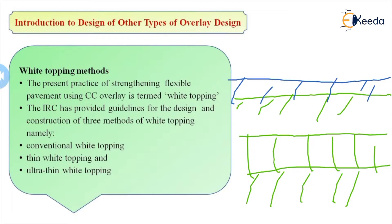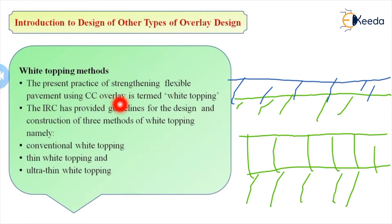We will discuss in depth about the design of rigid pavement over the existing road. The first concept is the white topping method. The present practice of strengthening flexible pavement using CC overlays is termed white topping — where the existing pavement is flexible and the overlay crust is of CC pavement. The IRC has provided guidelines for three methods: conventional white topping, thin white topping, and ultra thin white topping.